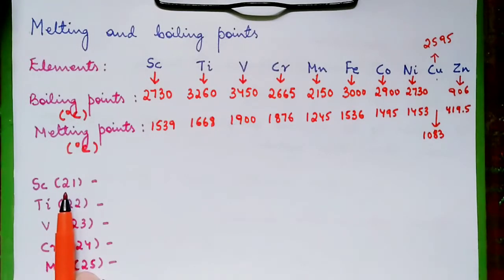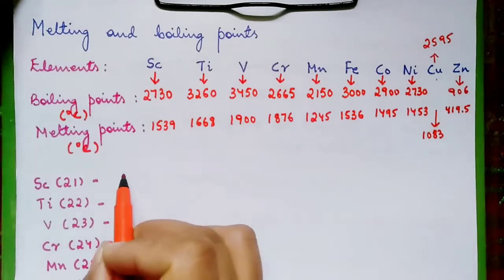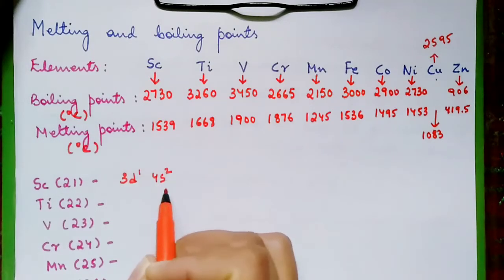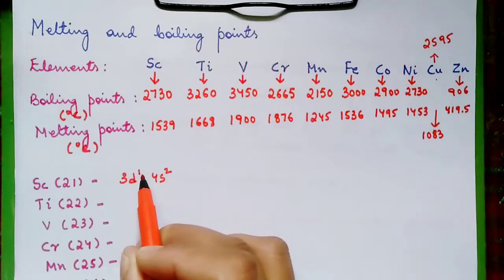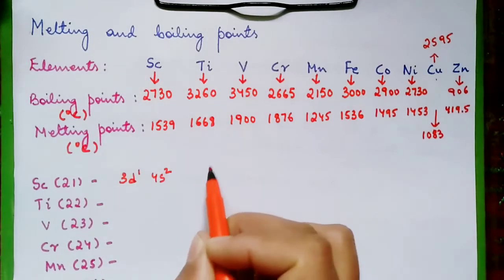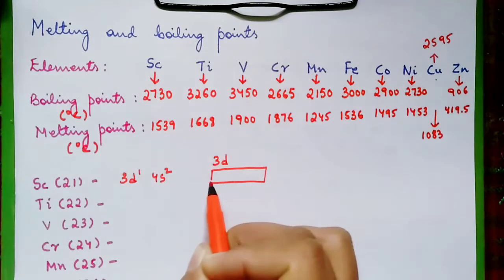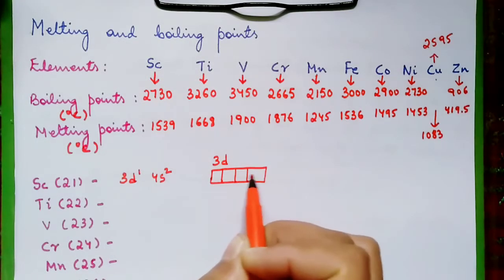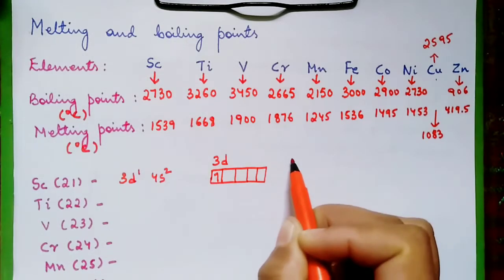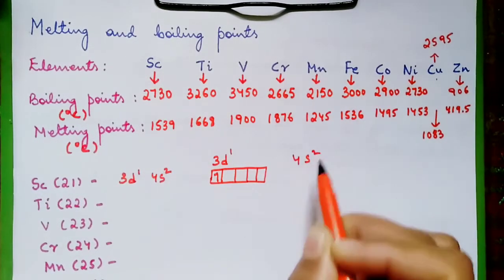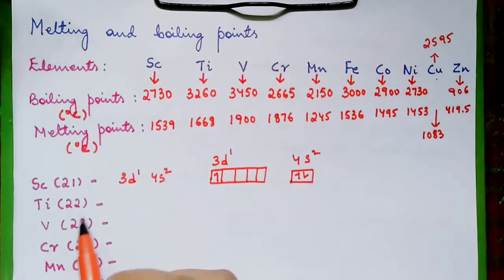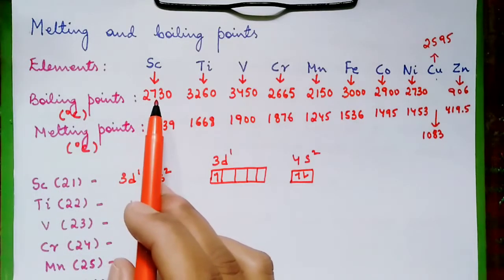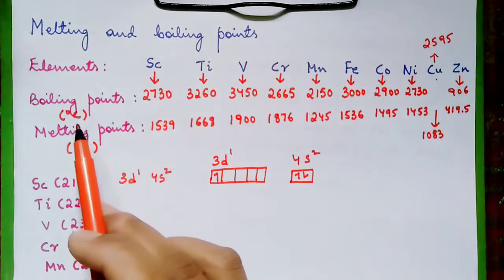For scandium, the atomic number is 21. The valence shell electronic configuration is 3D1, 4S2. There is only one unpaired electron in scandium. The boiling point is 2,730 degrees Celsius.